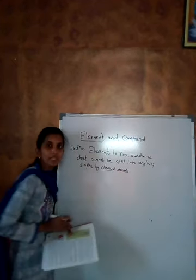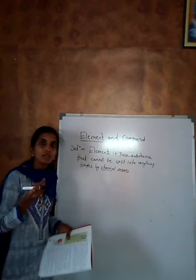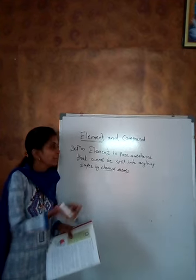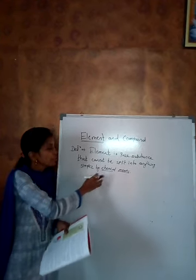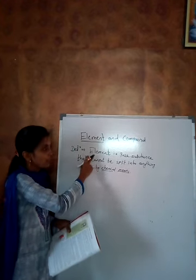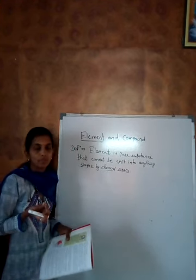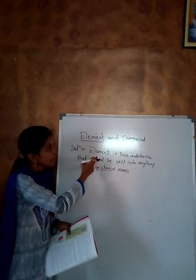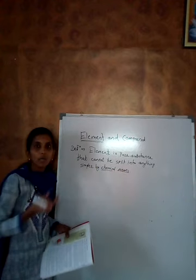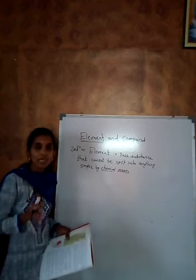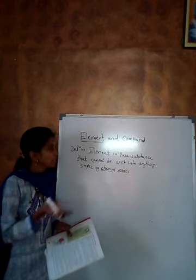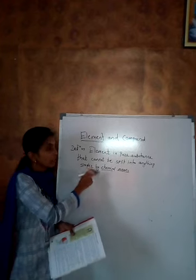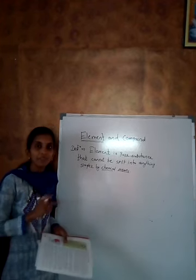Here the word 'by chemical means' is used — meaning an element can be broken into smaller pieces with the help of chemicals. So an element is a pure substance that cannot be broken down into a simpler form except by chemical means. This is the definition of elements.